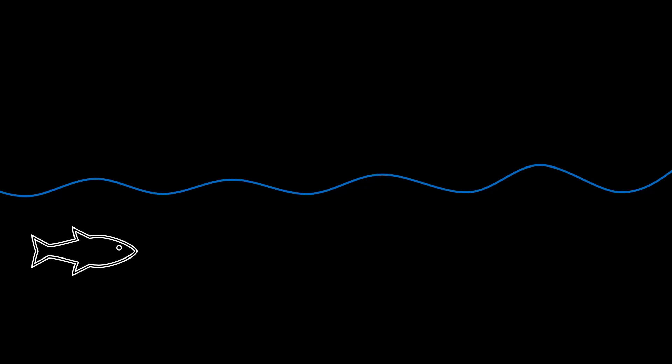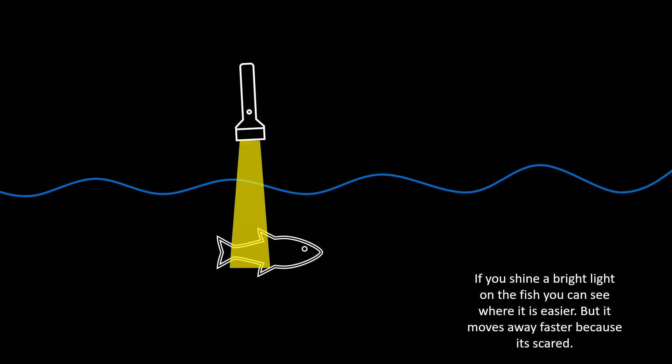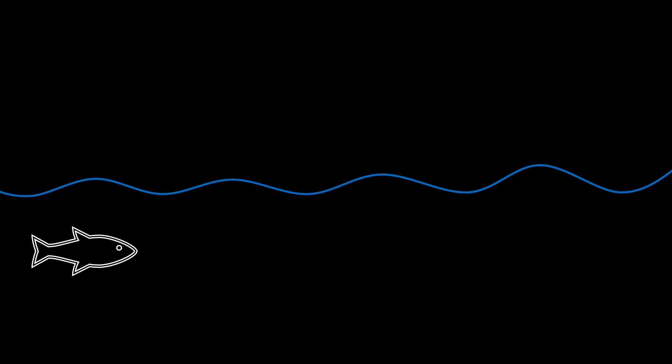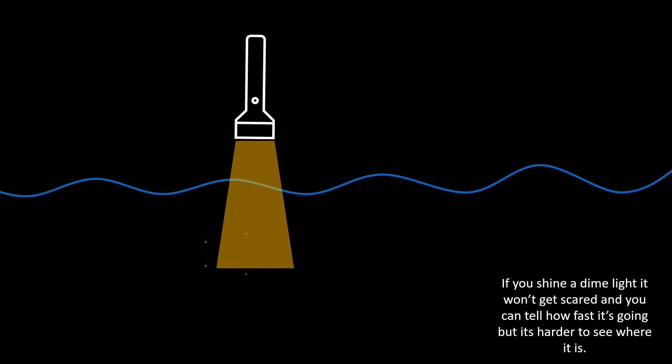So I've created an analogy to help you understand what I've just been talking about. Imagine trying to measure the speed of a fish in a pond using a flashlight. If you shine the light directly on the fish, you can determine its position accurately, but the sudden brightness startles the fish, making it swim faster. On the other hand, if you use a dimmer light to avoid startling the fish, you won't disturb its speed, but now you're less certain of its exact position.